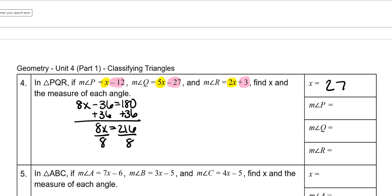And then you have to find all of the angle measures. So my measure of angle P, I'm going to plug it back in. So that's 27 minus 12, which is 15 degrees. Measure of angle Q is 5 times 27 minus 27, which again, put it in a calculator, you get 108.